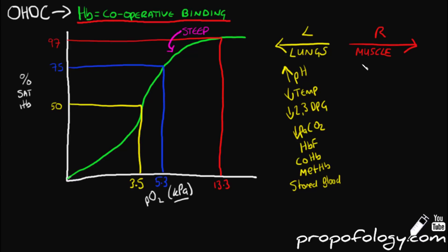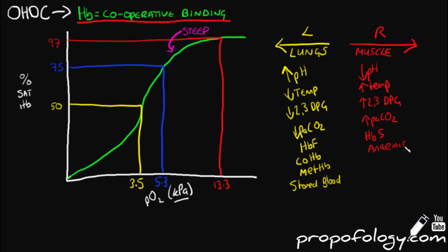Factors that cause a right shift in the oxygen haemoglobin dissociation curve are almost the opposite of factors that cause a left shift. You can see it in an acidotic pH, increased temperatures, increased 2,3-DPG, increased partial pressure of CO2, sickle cell anaemia, anaemia, pregnancy, and post-acclimatisation to altitude.